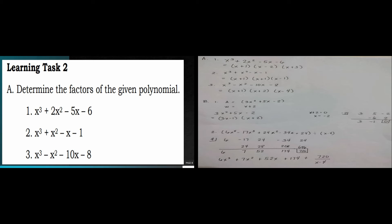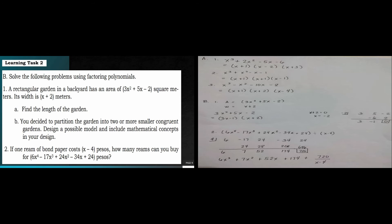For number 3, we have x cubed minus x squared minus 10x minus 8. The factors are x plus 1, x plus 2, and x minus 4. That covers Learning Test 2, letter A.